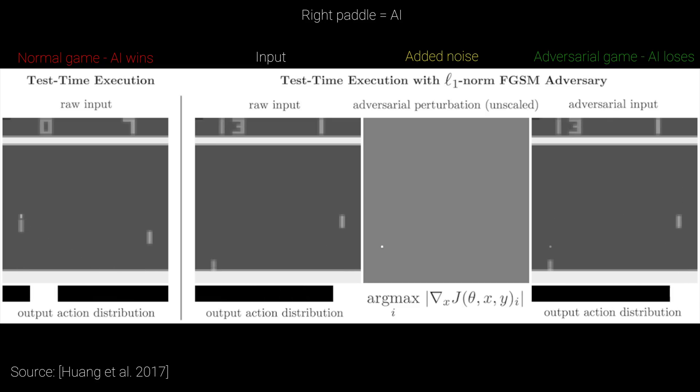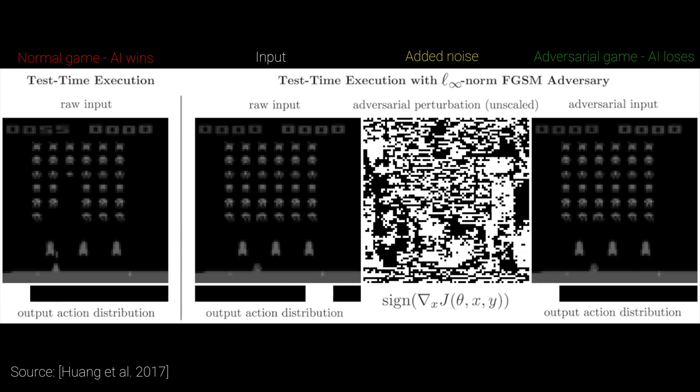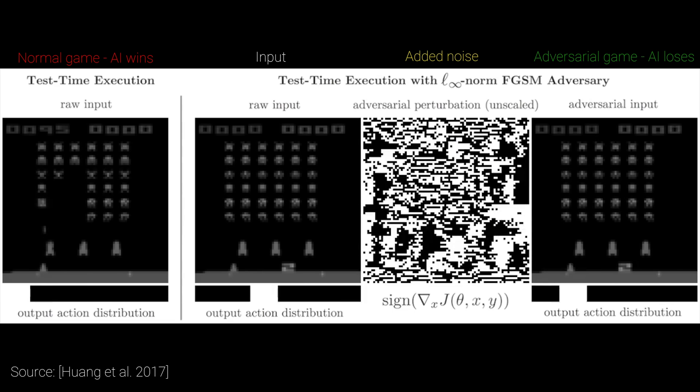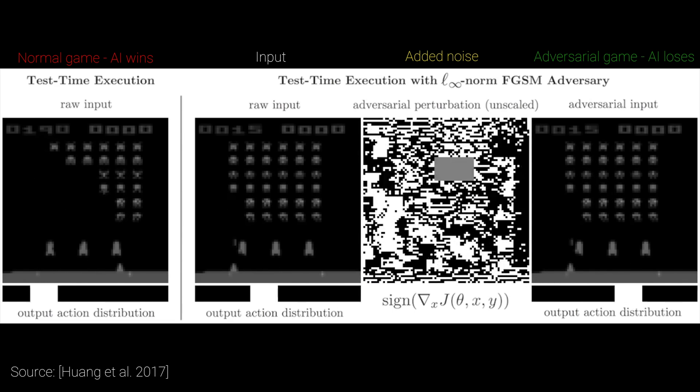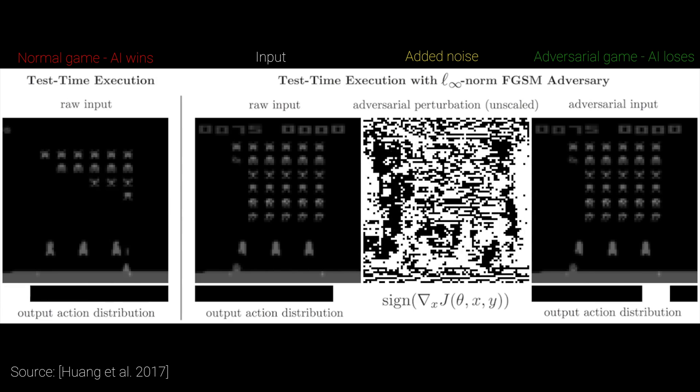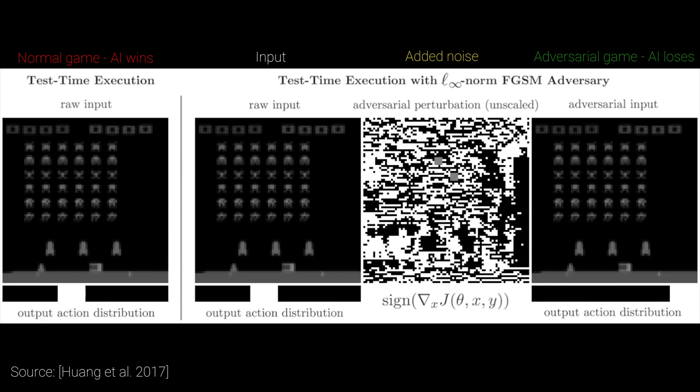In the white box formulation, we have access to the inner workings of the algorithm. But interestingly, a black box formulation is also proposed where we know much less about the target system, but we know the game itself and we train our own system and look for weaknesses in that. When we've found these weak points, we use this knowledge to break other systems.